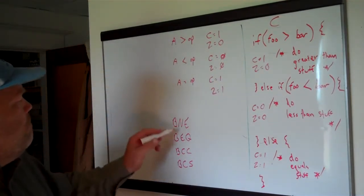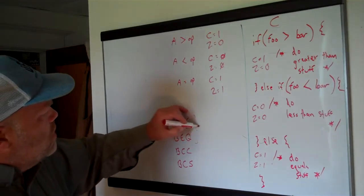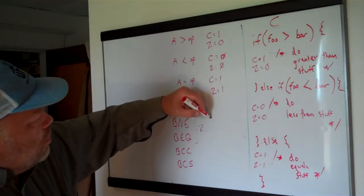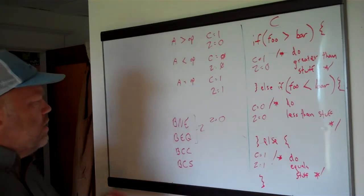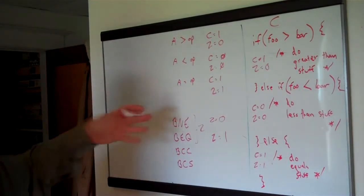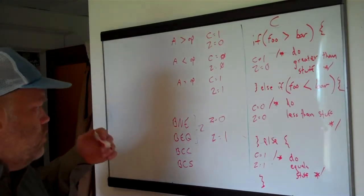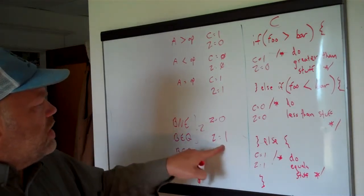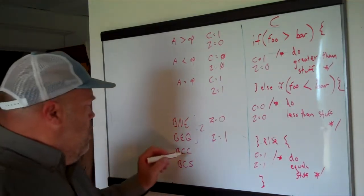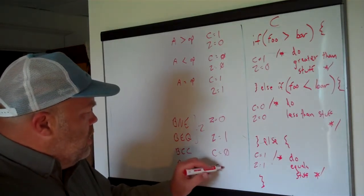BNE and BEQ both have to do with the zero flag. Branch if not equal (BNE) triggers if the zero flag is unset. Branch if equal (BEQ) triggers when the zero flag is set. That's why it can seem backwards and easy to get confused — BEQ means if the last operation produced a zero, which sets the zero flag to one. So it doesn't mean the zero flag is zero; it means the zero flag is one. Branch if carry clear (BCC) triggers if the carry is zero, and branch if carry set (BCS) triggers if the carry is one.